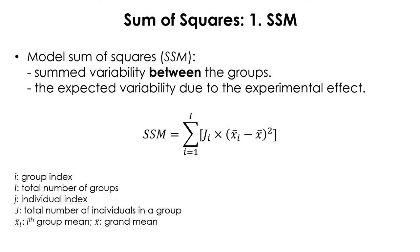If you think about how you calculate variance, the very first thing you need to do is calculate the mean. For the model sum of squares, you need to calculate two means: X-bar in the bracket represents the grand mean — the mean of every score — and X-bar sub i, which is the i-th group mean.